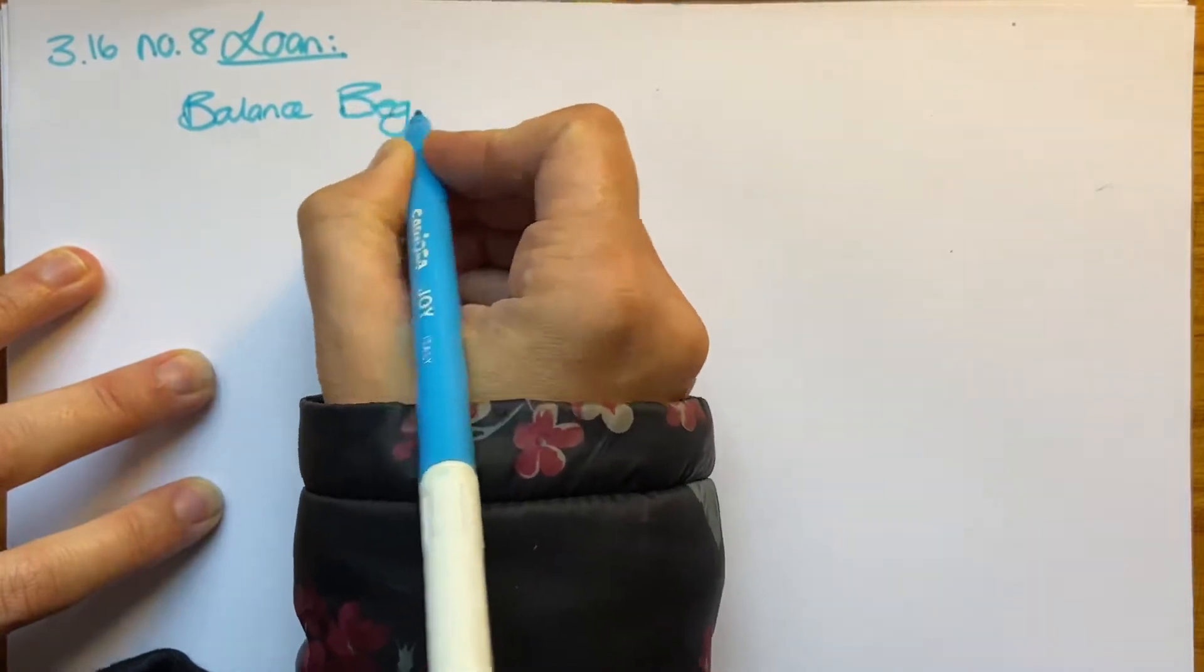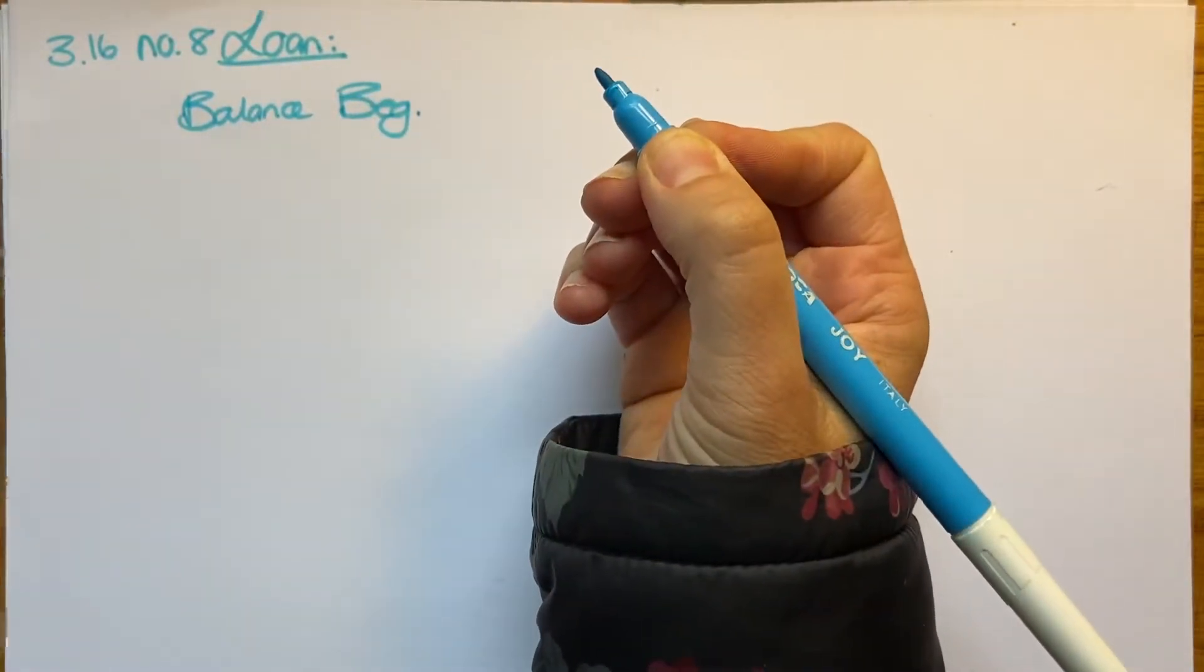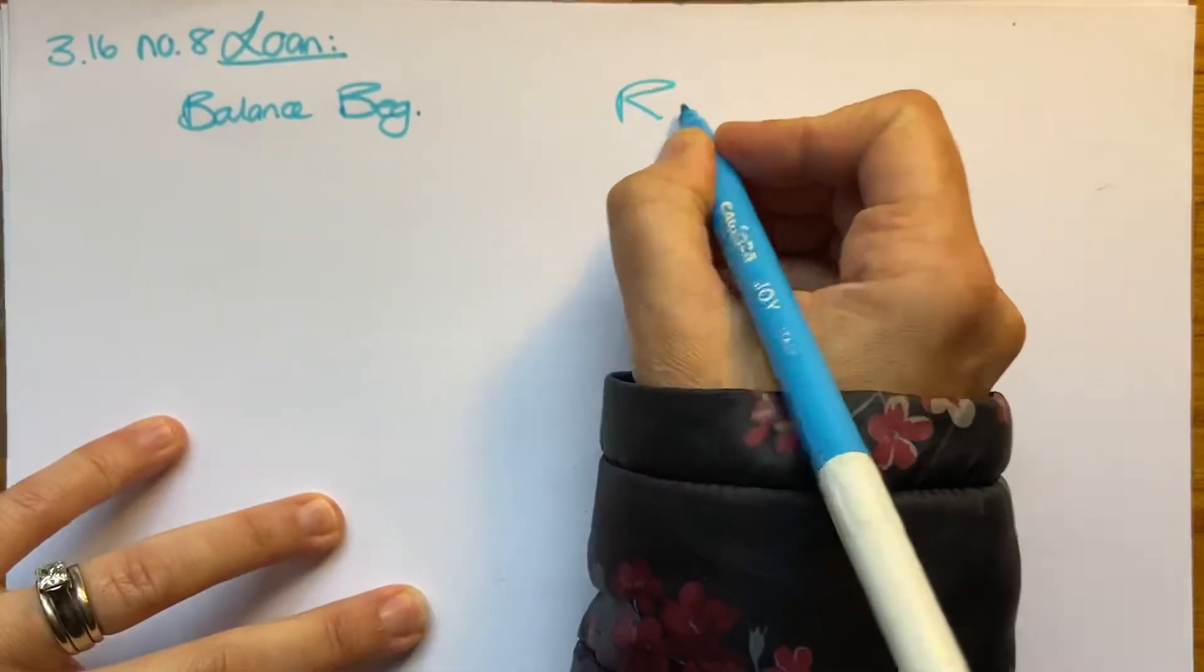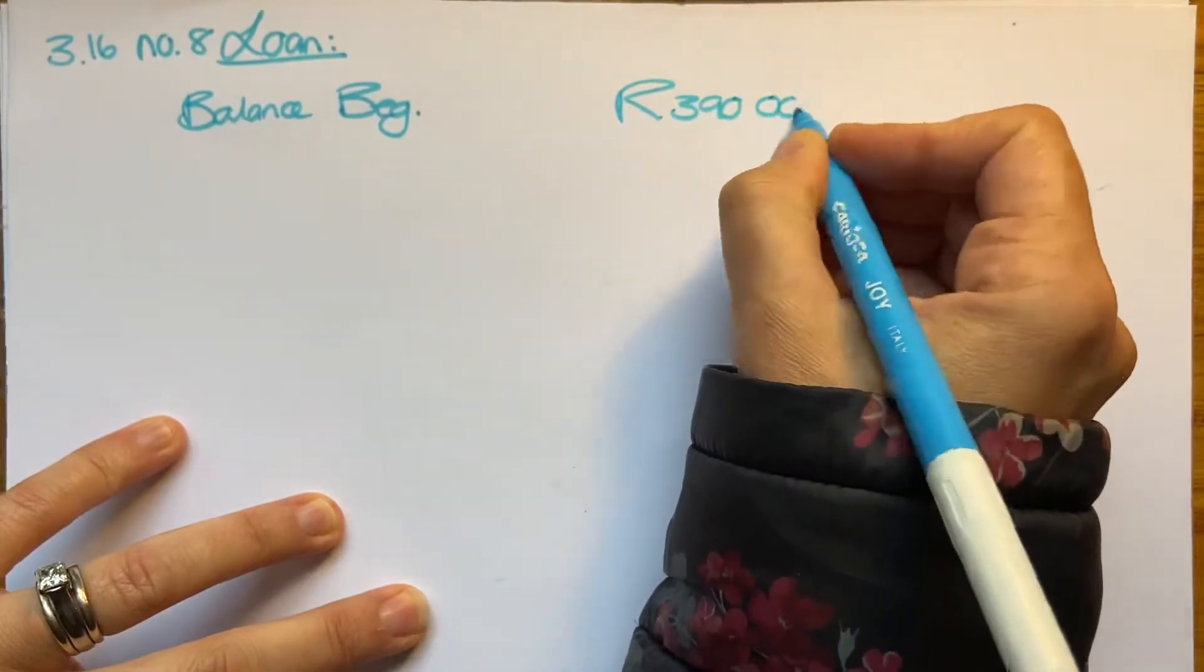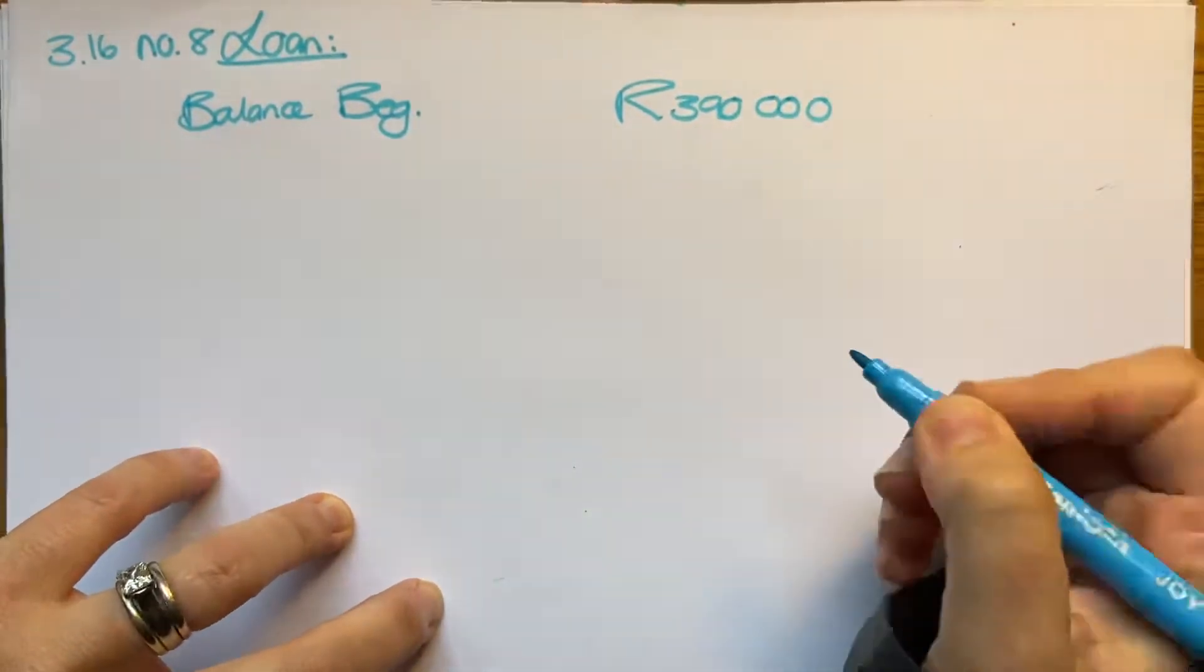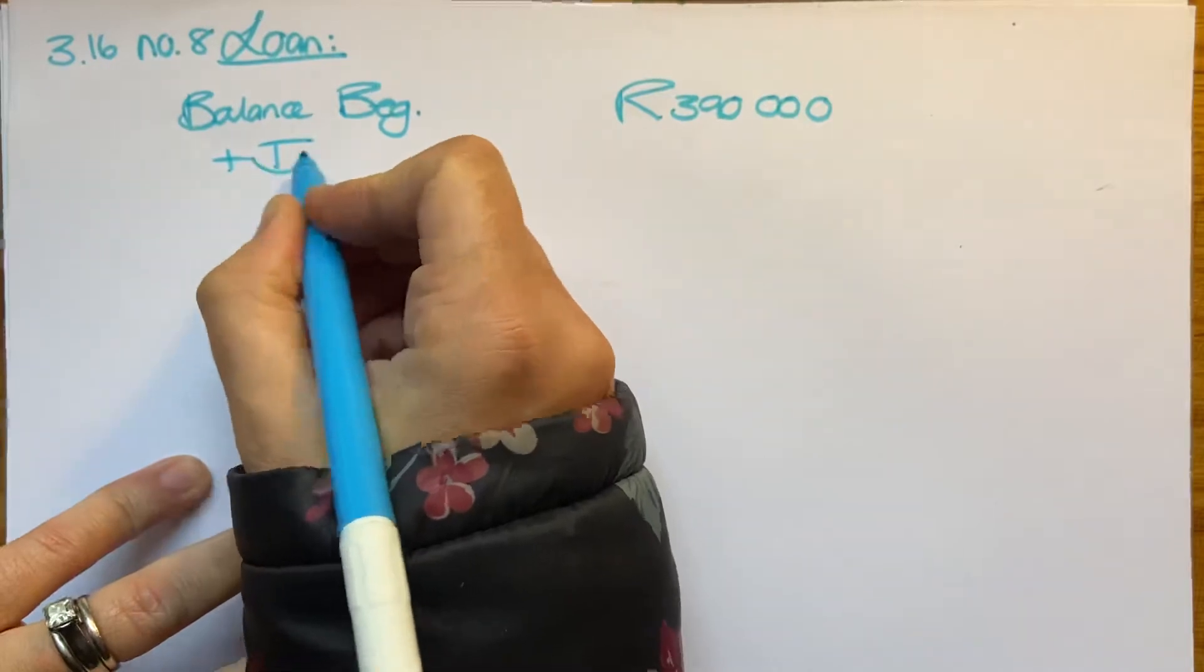You started with 390,000 rand. That's what you started with. Then during the year, some interest would have been added, and this is a standard format that you're going to use quite often now, so get used to it.